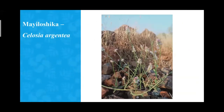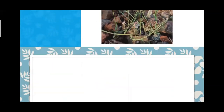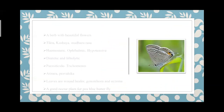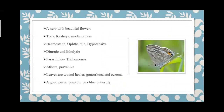The next plant is Miloshika — a beautiful plant with flowers that attract many flies and bees. It is considered a hemostatic and ophthalmic drug — it can control bleeding, protect the eyes, and control blood pressure.